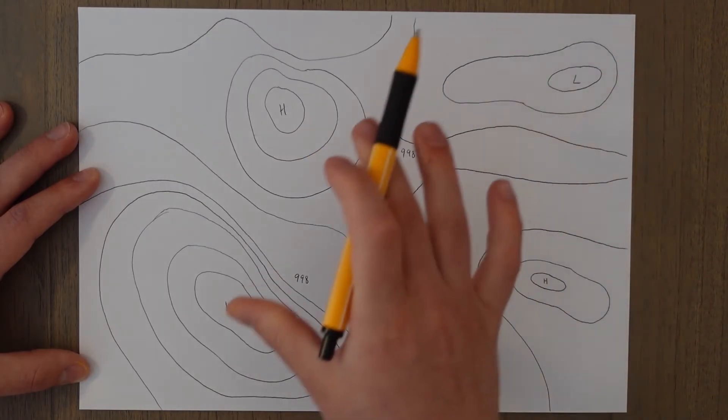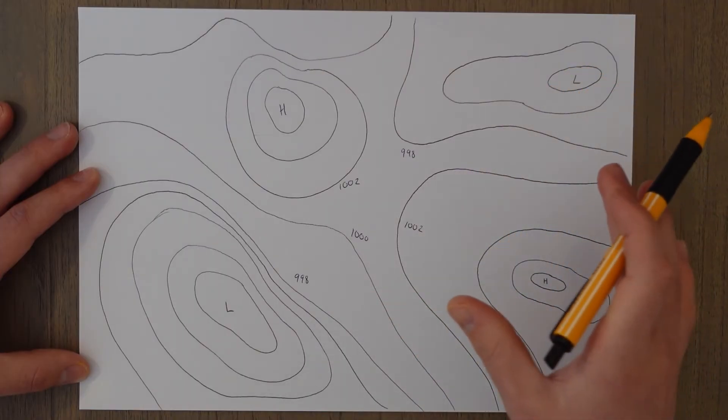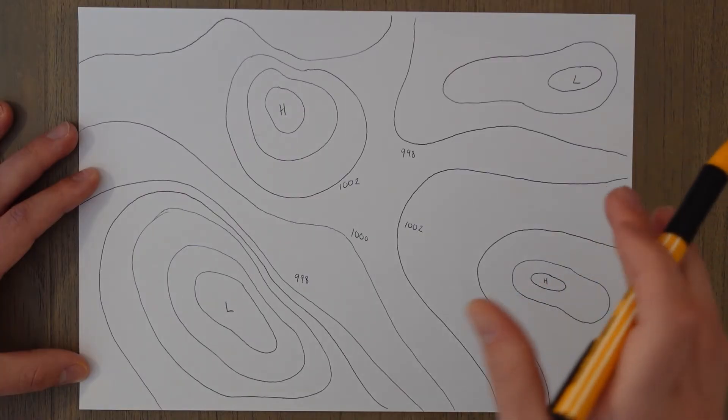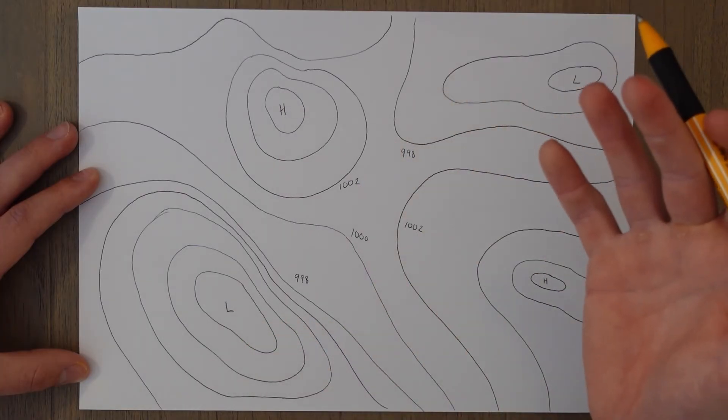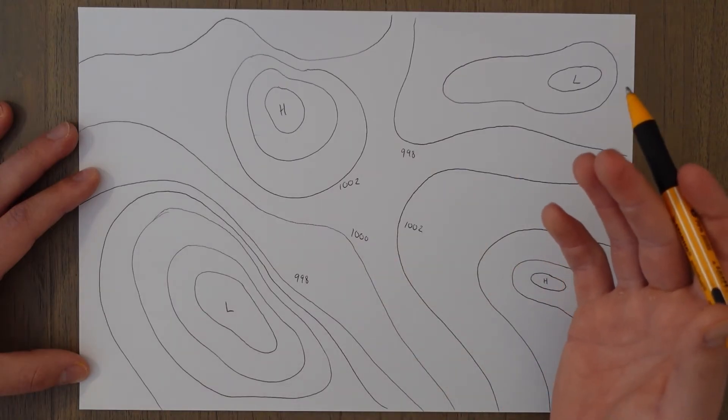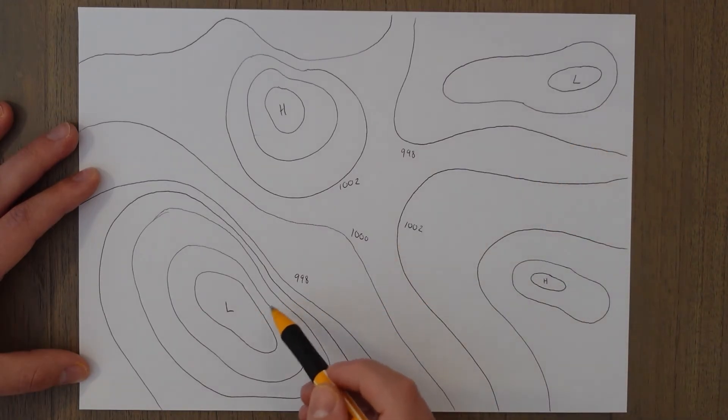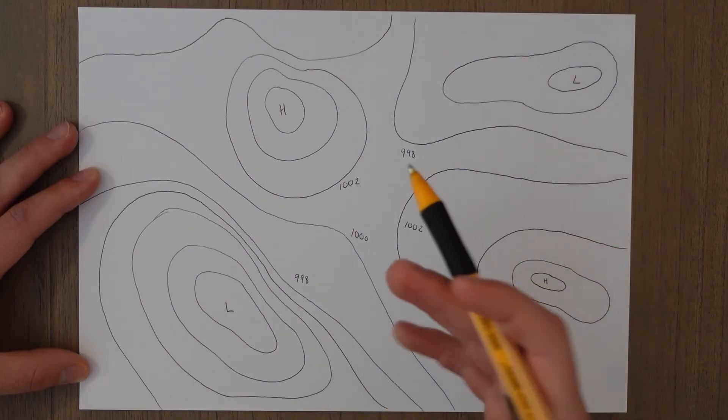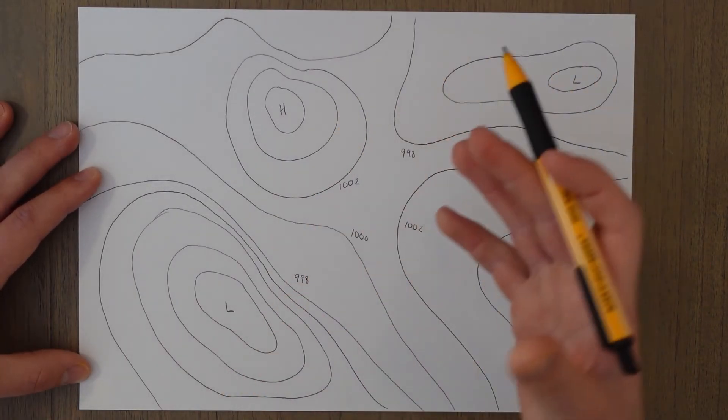And isobar charts are very useful as pressure systems and areas have fairly predictable weather, which is something we'll learn about more in future classes. But just a quick example for you: if the isobars are close together it means that the wind is going to be stronger than if they're quite far apart. So this is going to be a very windy area, this will be very calm over here. There are many more patterns and predictions that can be made using isobars as well.